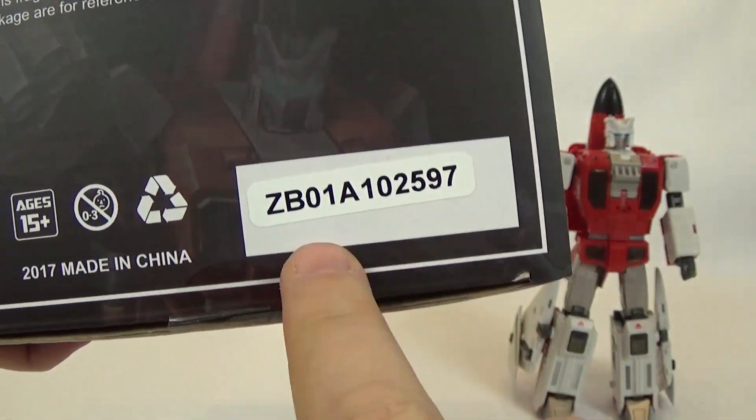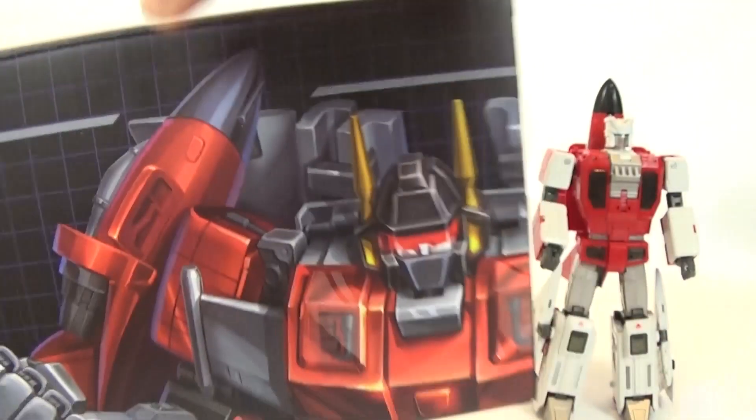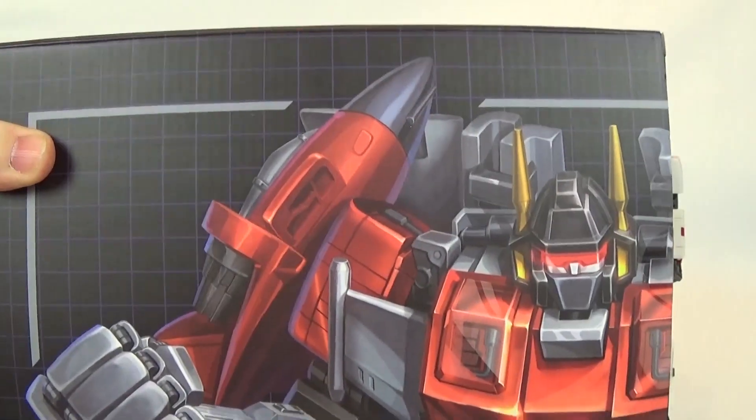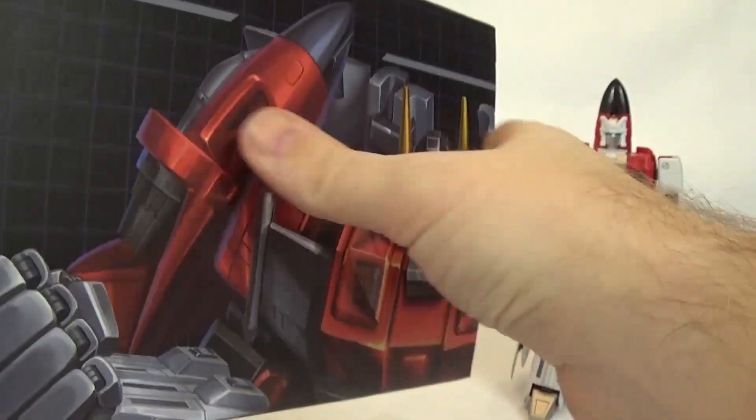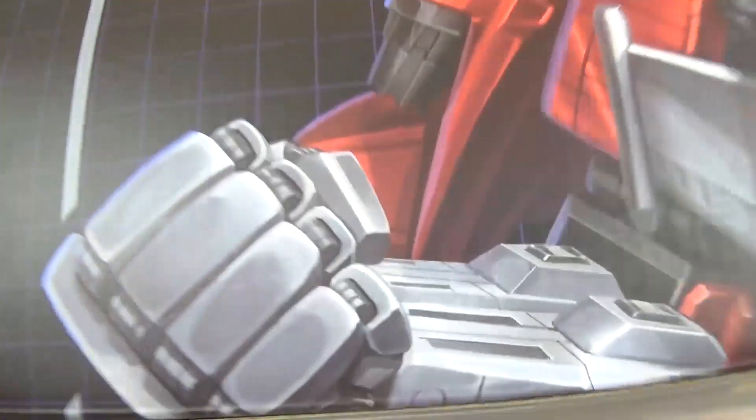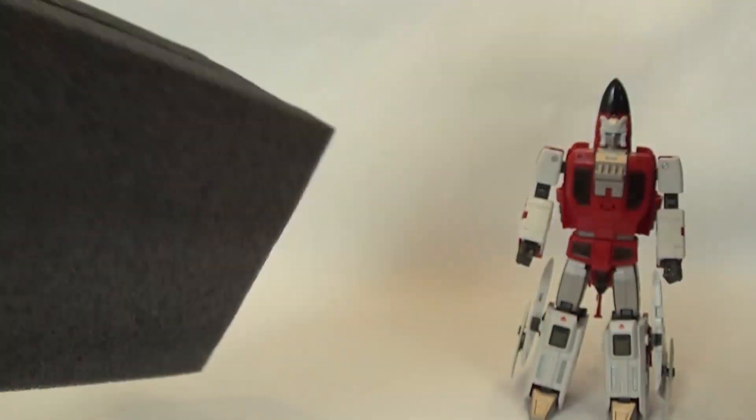And on the side here, you get a picture of Flyfire in his robot mode. On the bottom, you have warnings, and maybe like a number, a number of something. On the back, you get a nice picture of Superion, and all the boxes stacked up together will form you a nice picture.